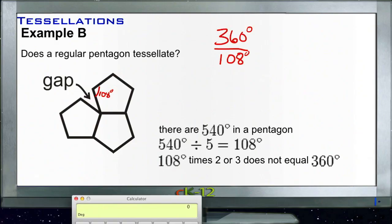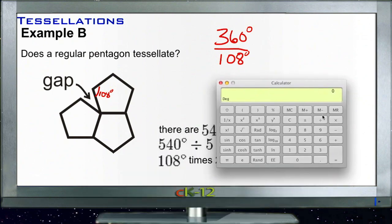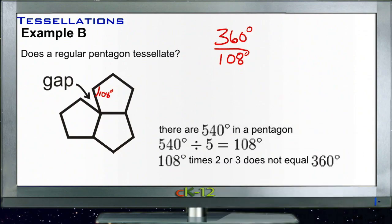360 divided by 108 gives us 3.333... So obviously that doesn't go in evenly, which tells us no, it's not going to tessellate. We can tell that right away—3.3 repeating.